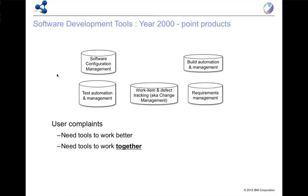I work within IBM's Rational, the brand that works within the software division, which deals with software development and systems and software development tooling. If you look at the history of tools — starting mid-90s or year 2000 — there are a number of best-of-breed tools you would use around software configuration management, test management, test case management, test automation, defect tracking, work item tracking, et cetera. The typical user complaints were that those point products, focused on certain roles or disciplines, needed to work better at the job they were doing.